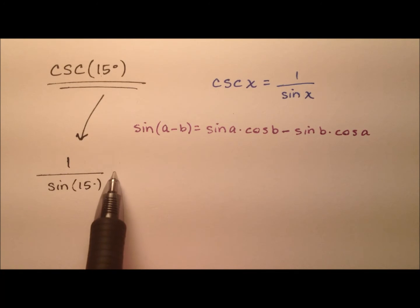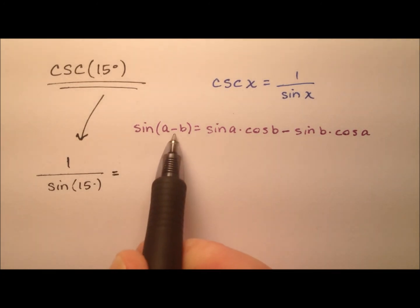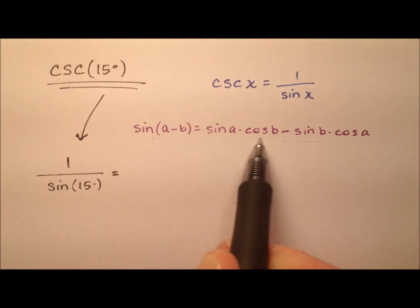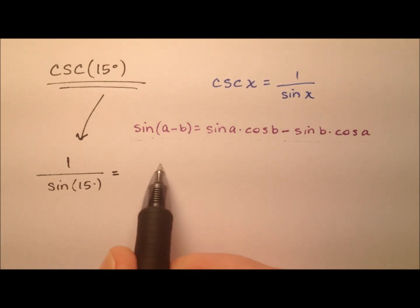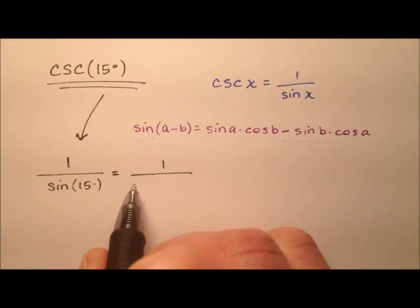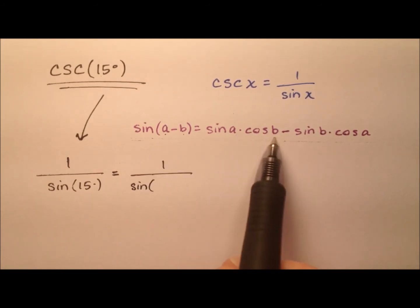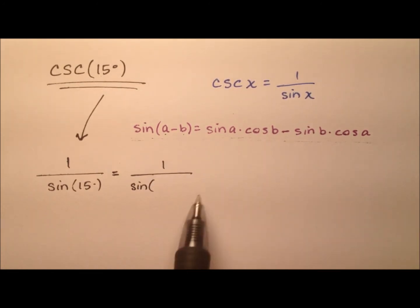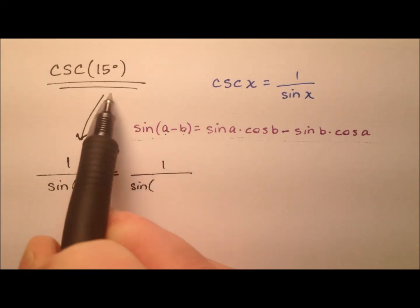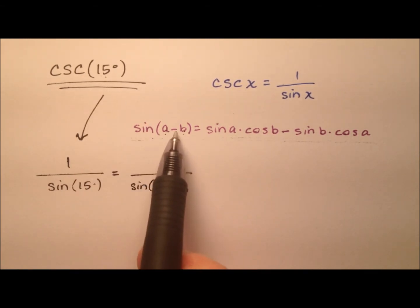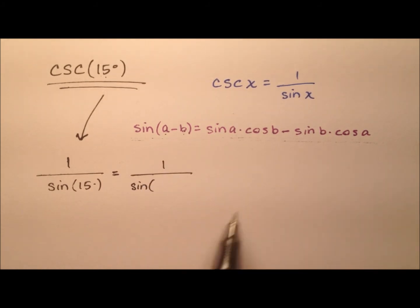You'll notice I've written here this difference formula for sine, so we're going to use this. It's 1 over... We need two values, a and b, which we'll use throughout this expansion, that subtract to make 15 degrees but also are easy to work with—angles that we know the values for sine and cosine.